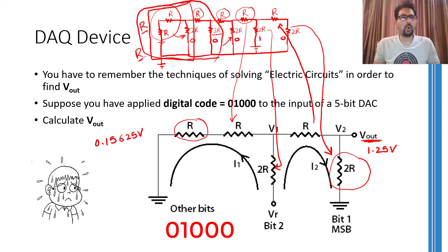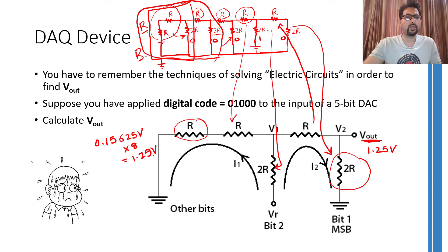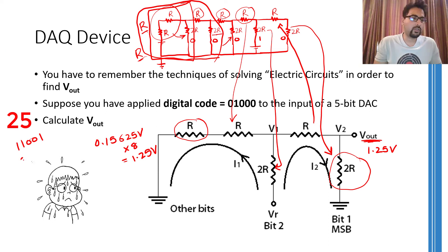In the example we just saw, the digital code was 01000, which represents the 8th level. If you add the voltages of 8 levels — that is 0.15625 volts per level — you once again land on 1.25 volts. Now, can you figure out the analog output corresponding to the digital code 11001? This code represents the 25th level. Multiplying 25 by 0.15625 gives 3.90625 volts.